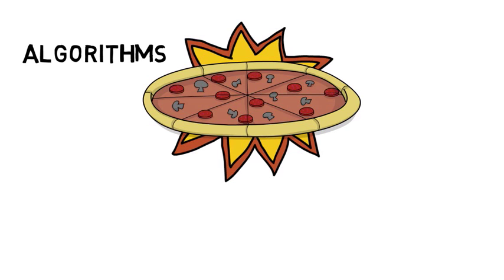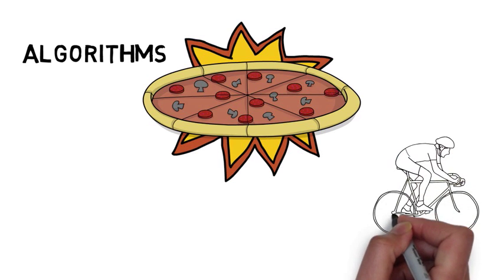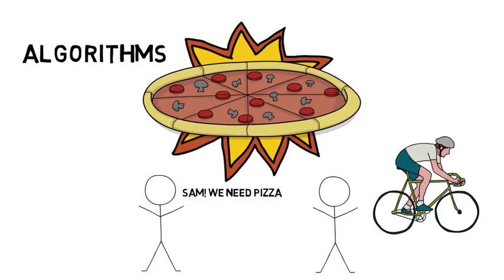Remember that time you were mending your bike and you wanted Sam to order pizza? Rather than saying, Sam, go online, find the pizza shop, choose pizzas for us, then pay so they can deliver pizzas to us. All you had to say was, Sam, we need pizza. And he was on the case.